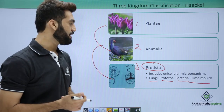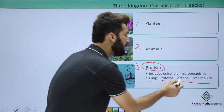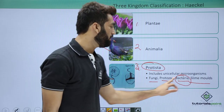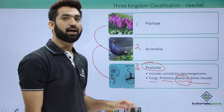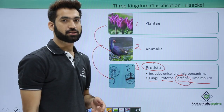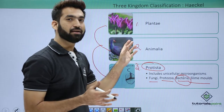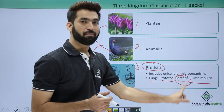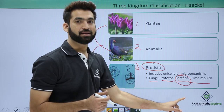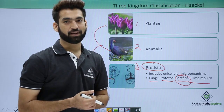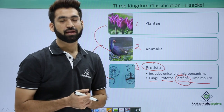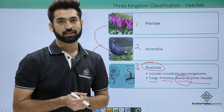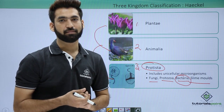But here, if you can see, the bacteria are prokaryotes while all other three are eukaryotes. So now a fourth kingdom should come which will replace bacteria from this group, giving a four kingdom classification system. In the next session we'll be talking about the four kingdom classification system.